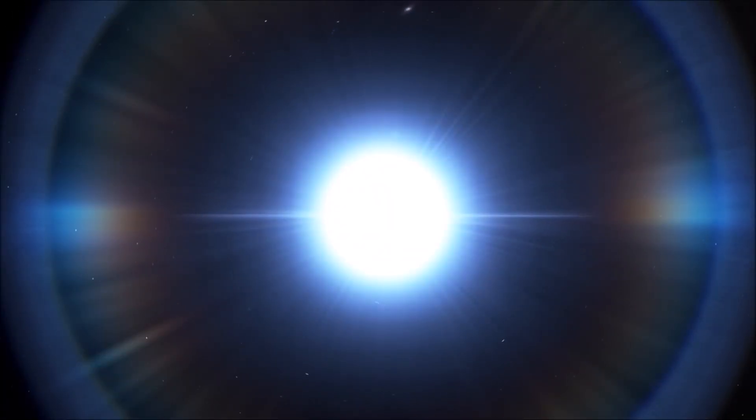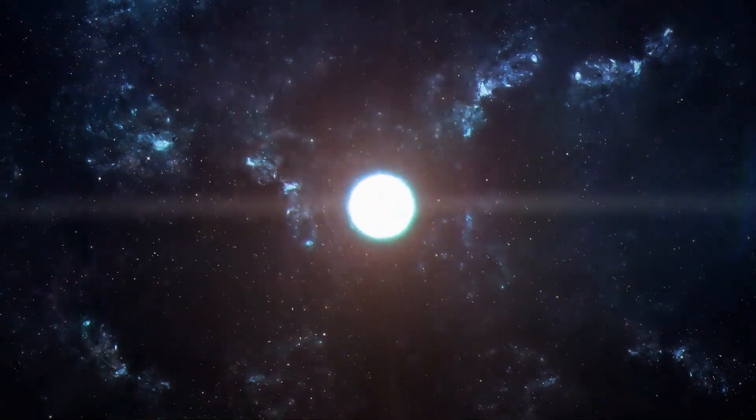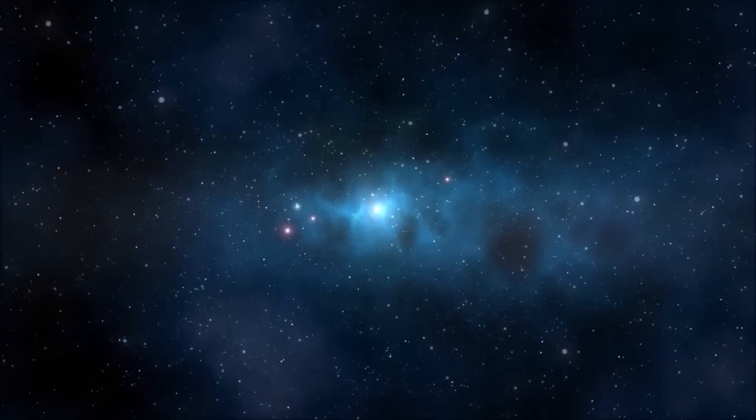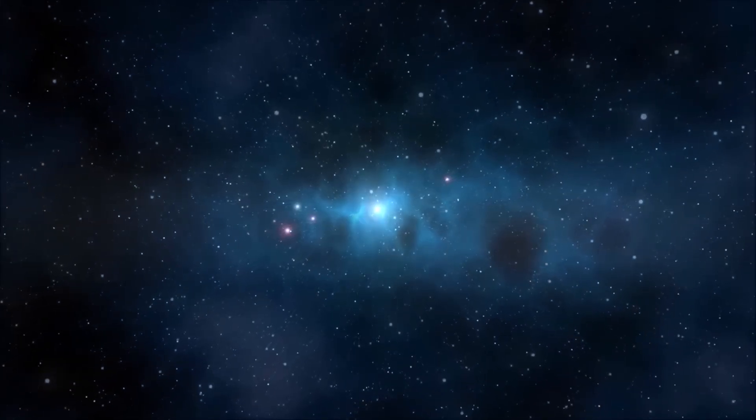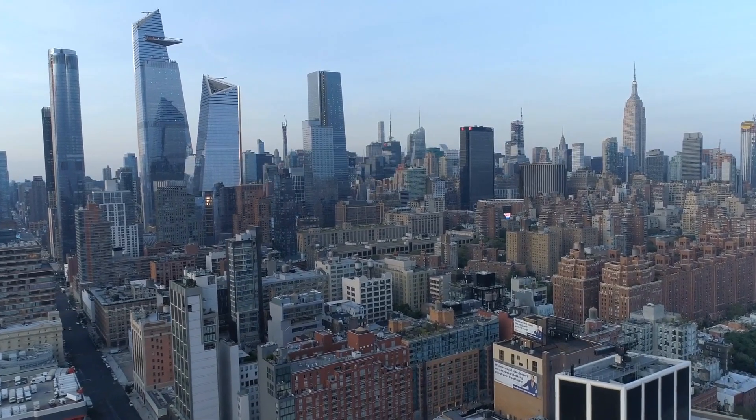That remnant is what we call a neutron star. At first glance, you might think there's nothing impressive about them. They're incredibly small compared to the stars they once were, barely 20 kilometers across—small enough to fit inside a single city. Picture something the size of Manhattan, yet with a weight greater than that of our sun. A single teaspoon of neutron star material would weigh billions of tons, more than the combined weight of all the skyscrapers in New York.